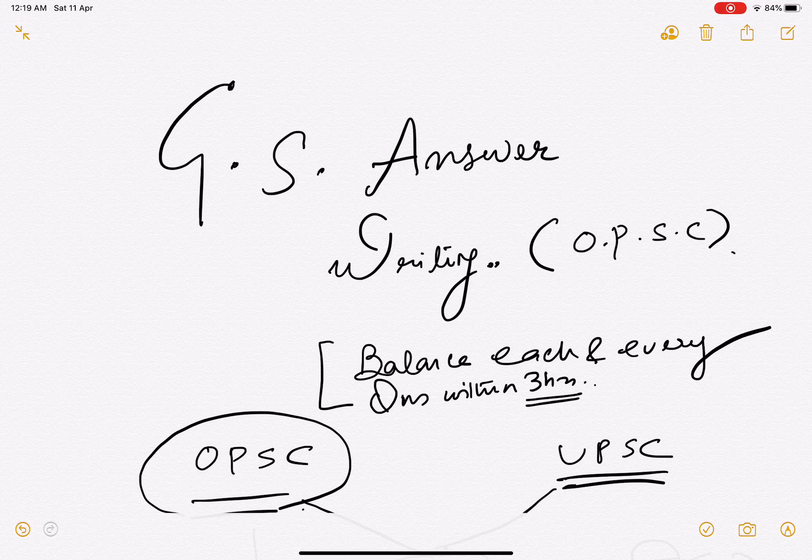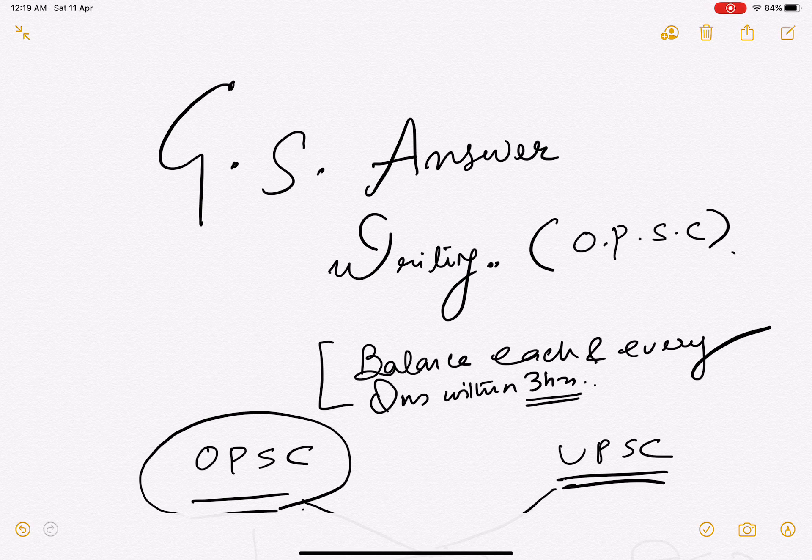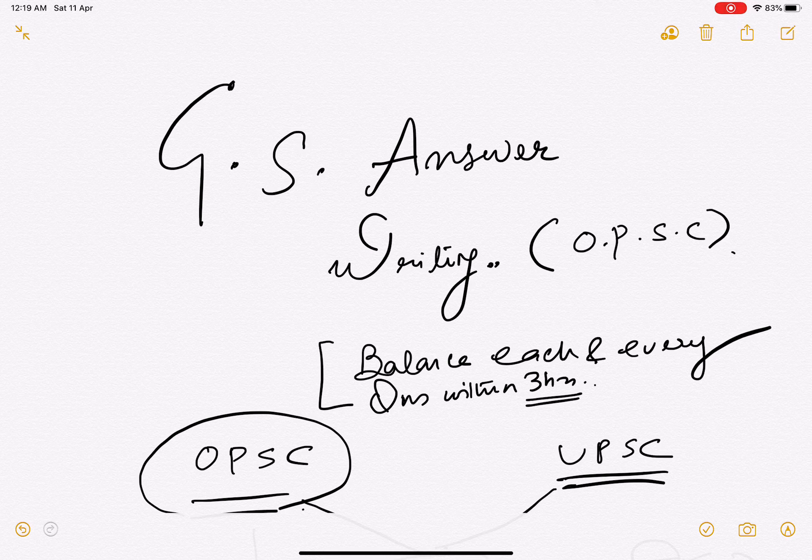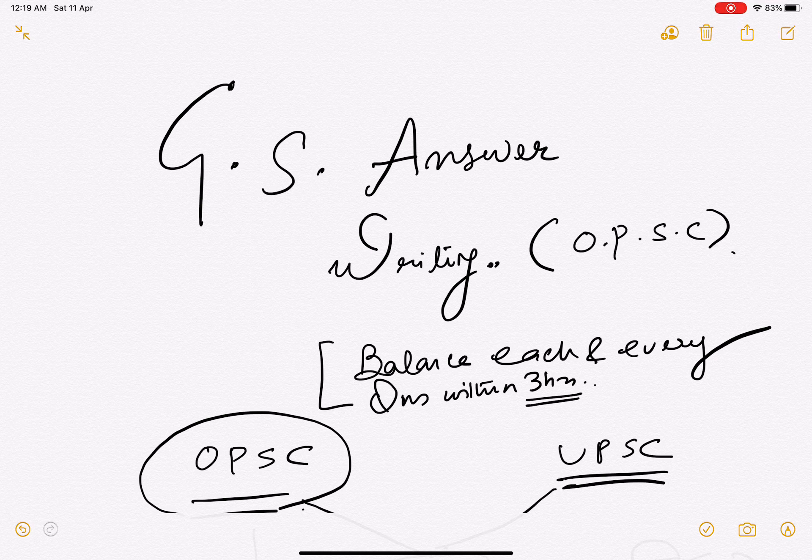In this context, there might be a chance that the examiner would get fed up that this person has not written the answer systematically. But again, it's very difficult to ascertain that. If you say 'I'm very good at question 36, I'll go for 36 first,' go for it, no issues. But still then remember things that we have said.